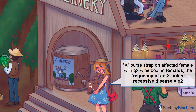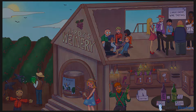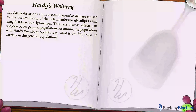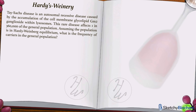And that brings us to the end — are you feeling as buzzed as I am? Let's do a sample question. Tay-Sachs disease is an autosomal recessive disease caused by the accumulation of the cell membrane glycolipid GM2 ganglioside within lysosomes. This rare disease affects 1 in 360,000 of the general population. Assuming that the population is in Hardy-Weinberg equilibrium, what's the frequency of carriers in the general population? This question stem gives us the incidence of an autosomal recessive disease, and these individuals express the trait, meaning they have two copies of the recessive allele. So 1 in 360,000 is Q squared.